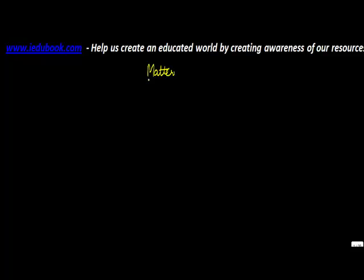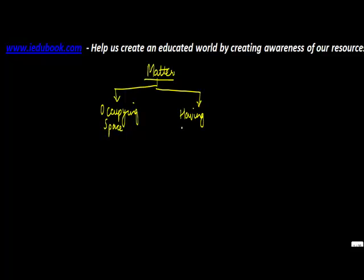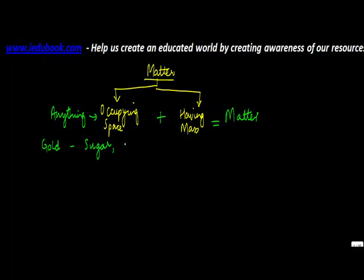Let us understand about matter in this video. In order to qualify as matter, there are two things which are essential: one is occupying space, and the second is having mass. So anything which occupies space and has mass is known as matter. Let's take some examples — gold, sugar, and air.